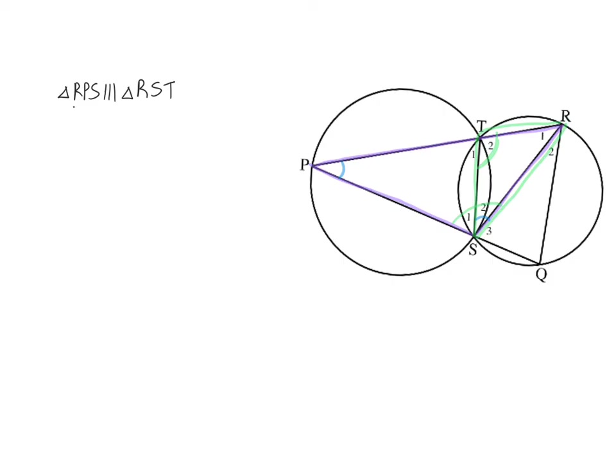So we can say that the first two letters in the first triangle form a ratio with the first two letters in the second triangle. So RP and RS will have a ratio that is the same as the first and last letters in both triangles. So RS and RT, which will have the same ratio as the last two letters in both triangles, which will be PS and ST.